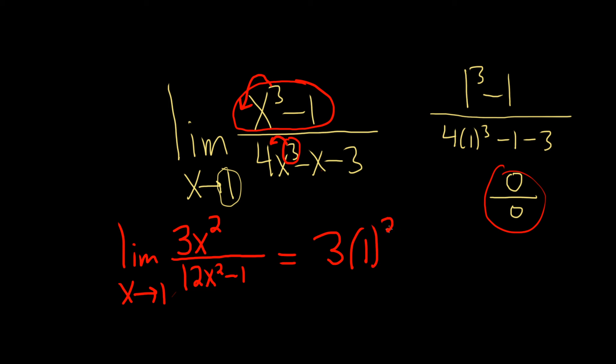So 3 times 1 squared over 12 times 1 squared minus 1. So that's going to be 3 over 12 minus 1. So that's equal to 3 over 11. And that would be your final answer. I hope this video has been helpful.